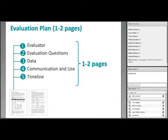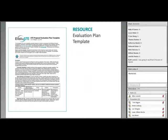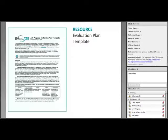A quick overview of what needs to be included in the evaluation plan — the five essential elements: evaluator information, evaluation questions, information about data collection and analysis and interpretation, communication and use plan, and timeline. All of that can be put into one to two pages. Evaluate also has an evaluation plan template that helps you present the plan succinctly and organize the information efficiently.